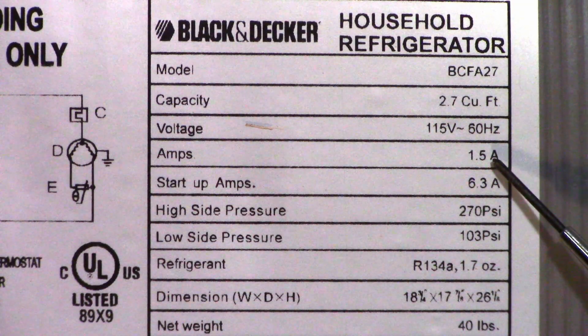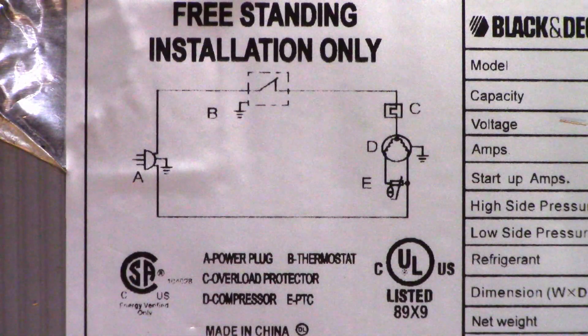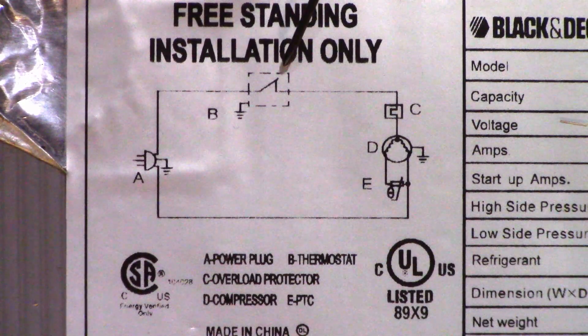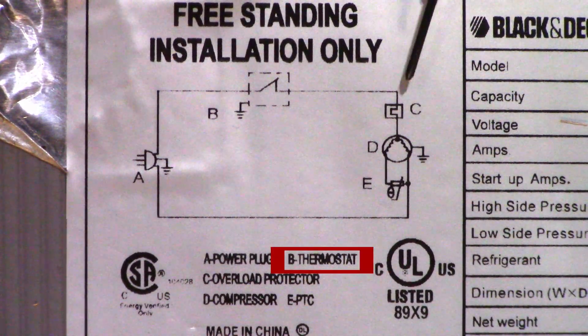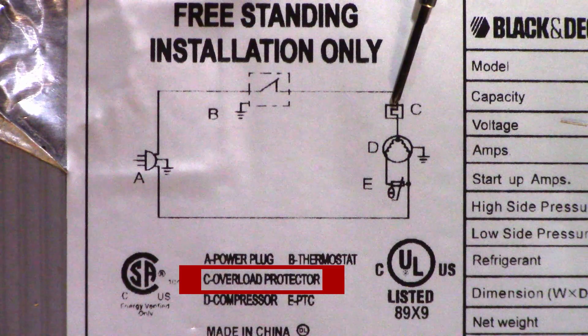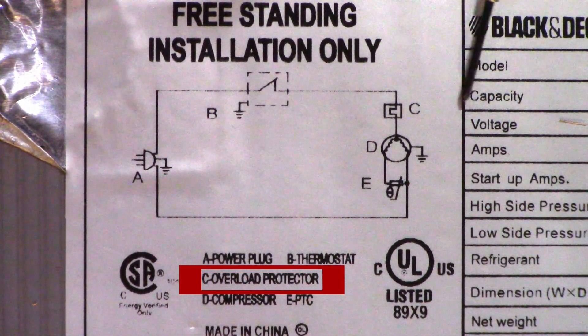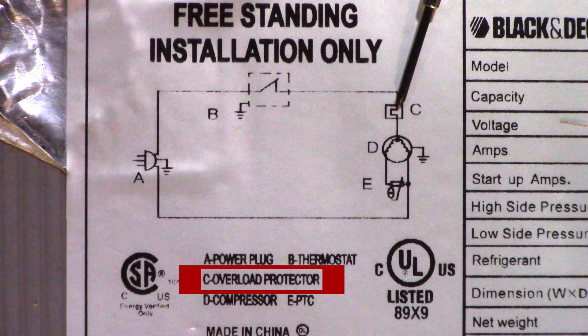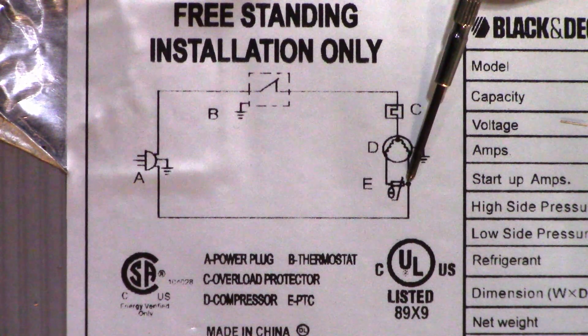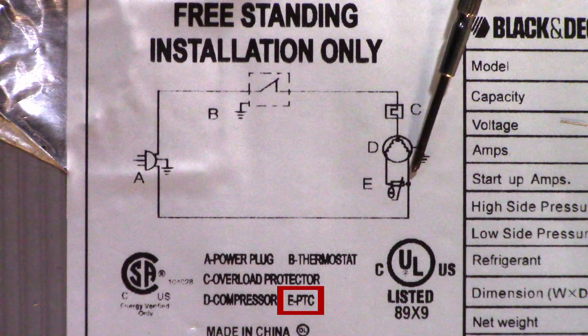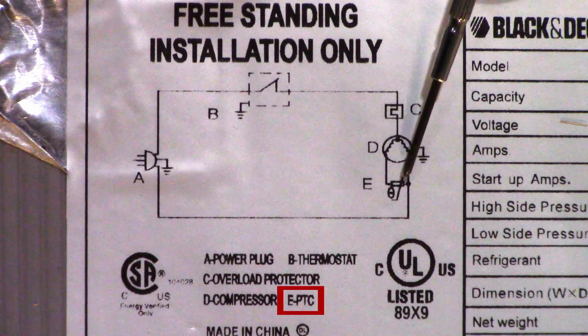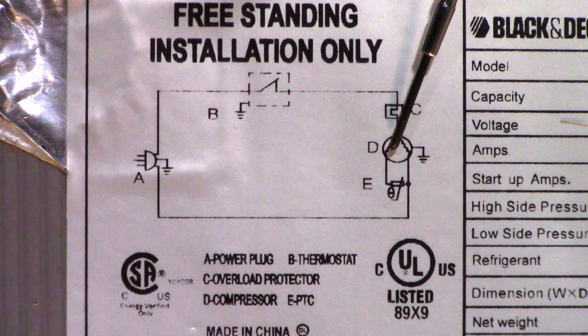Looking back at the schematic, we know the thermostat's good because the compressor is drawing power. The thermal cutout, which is meant to act on current over 1.5 amps for a long period of time, is opening. So I'm hoping we just have a bad start thermistor right here. Let's go ahead and open the little box on the side of the compressor and see what's in there.